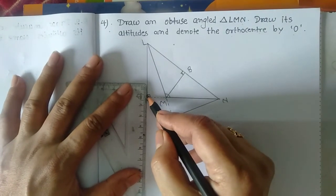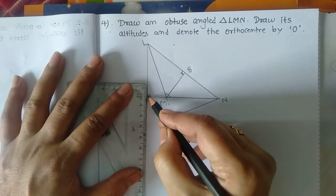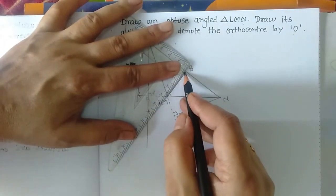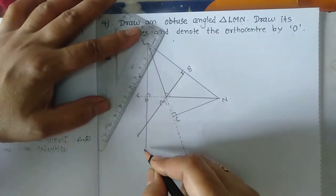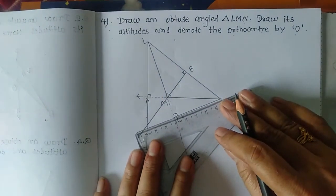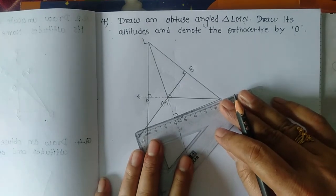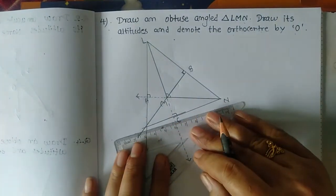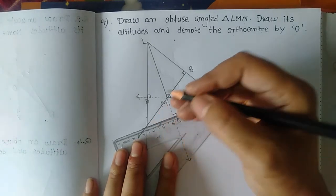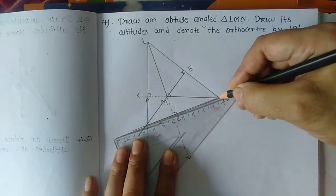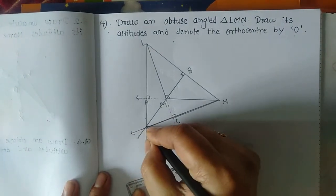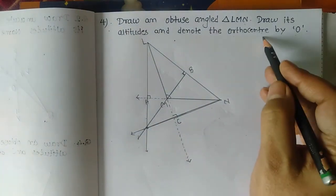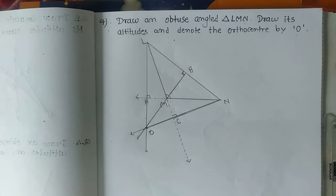We extend the altitudes. This is the second altitude, and this is the third altitude. All three altitudes pass through a single point, which is denoted by O.